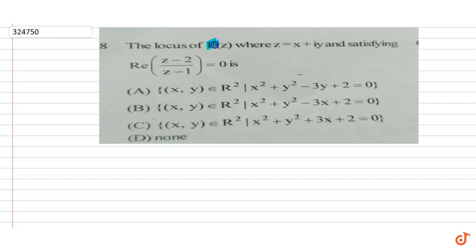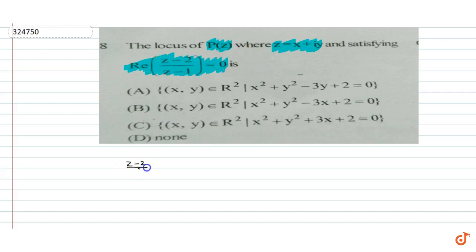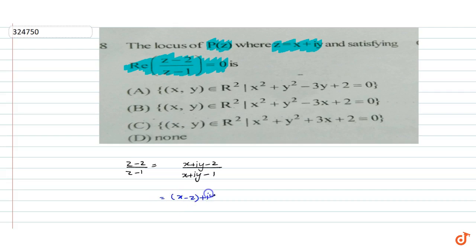The question given is: find the locus of P(z) where z = x + iy, satisfying the condition that the real part of (z - 2)/(z - 1) is equal to 0. So we look at (z - 2)/(z - 1), which is (x + iy - 2)/(x + iy - 1), that is (x - 2 + iy)/(x - 1 + iy).